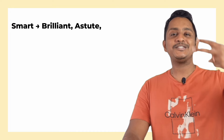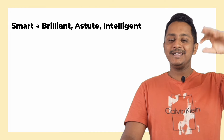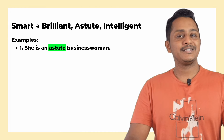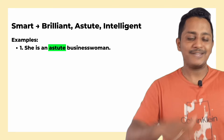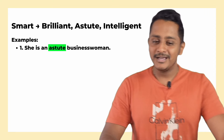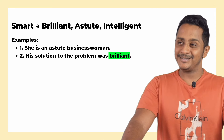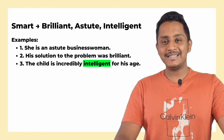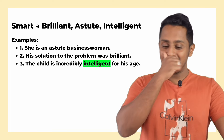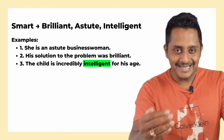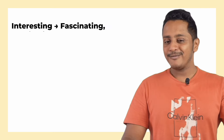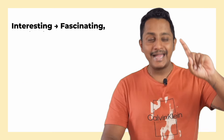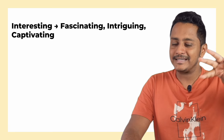The next word is 'smart.' Instead of 'smart,' use brilliant, astute, or intelligent. For example, instead of 'she is a smart businesswoman,' say 'she is an astute businesswoman.' Instead of 'his solution to the problem was smart,' say 'his solution was brilliant.' Instead of 'the child is incredibly smart,' say 'the child is incredibly intelligent for his age.'